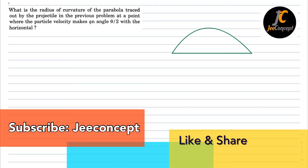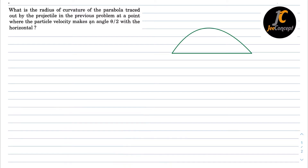In the previous problem I gave you a formula which says radius of curvature is nothing but velocity squared upon a perpendicular. In the previous problem, a perpendicular was quite easy because at that time it was only g, with velocity vx. But in this situation the problem is a bit more difficult.